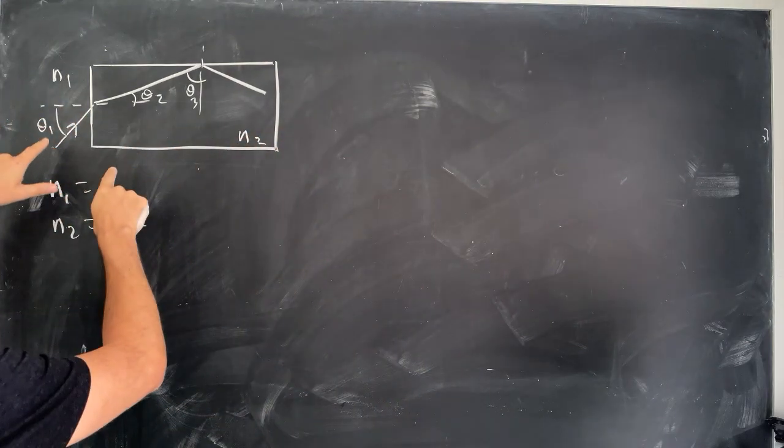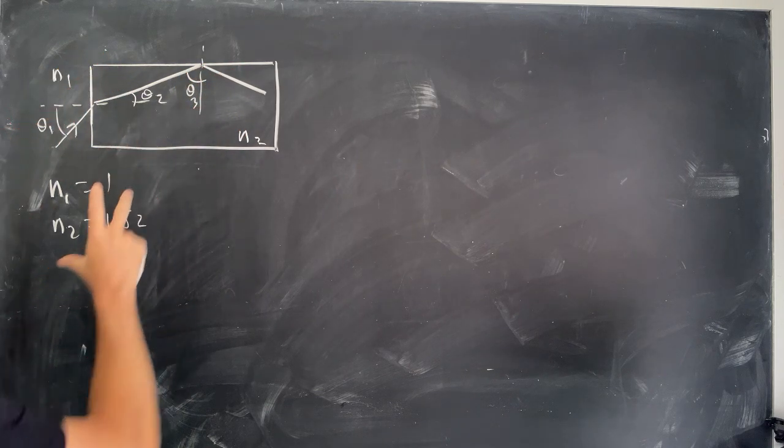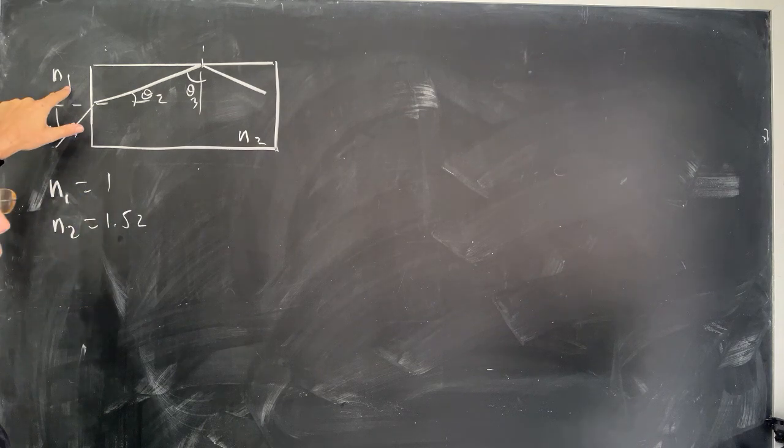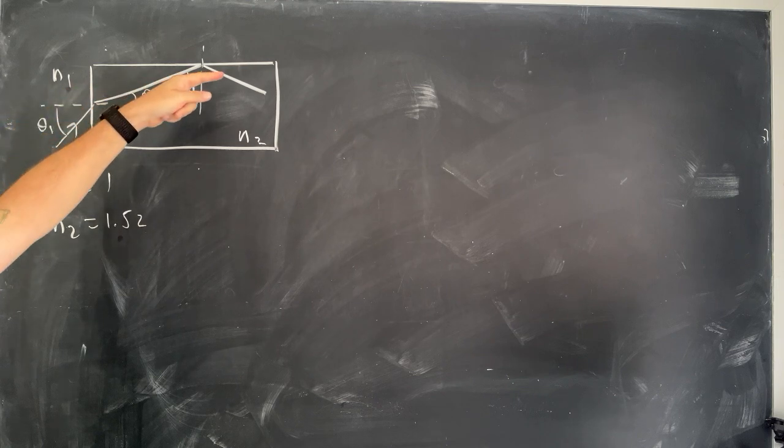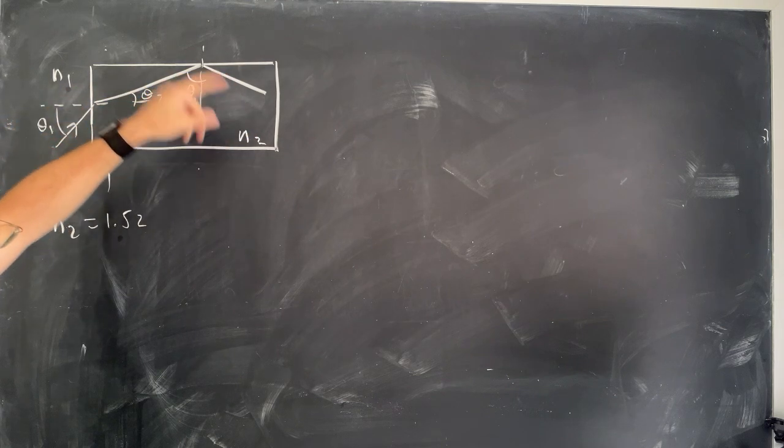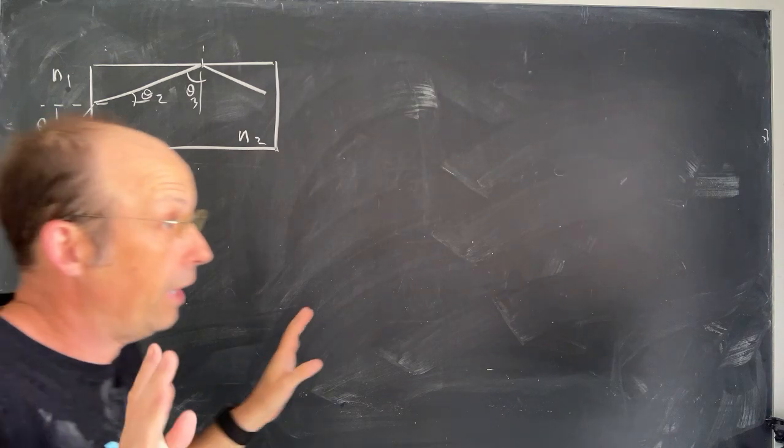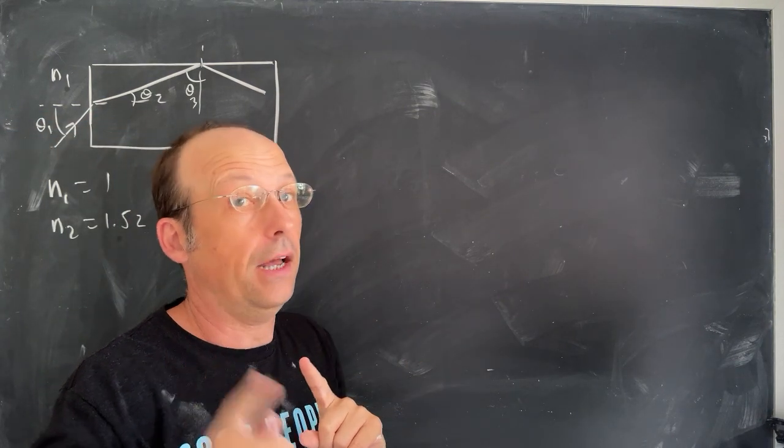So the problem shows this diagram right here. There's a block of material, and they say it's crown glass. I looked up the index of refraction 1.52. I assume that's air. I'm going to use 1, and it says light comes in, and this side, and it's going to be reflected in. It's going to be totally internally reflected, and it says for any angle. Let's figure that out.